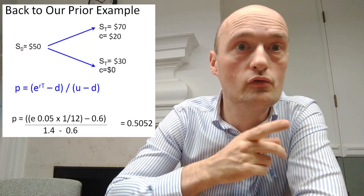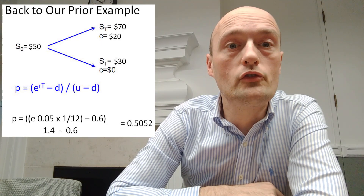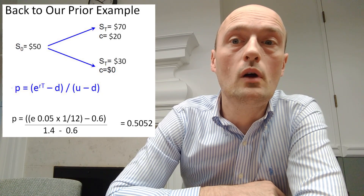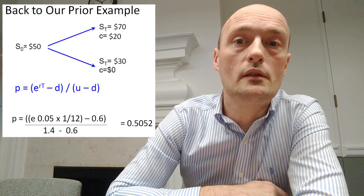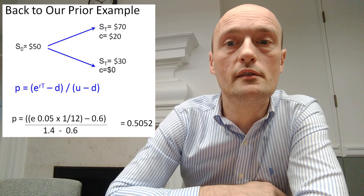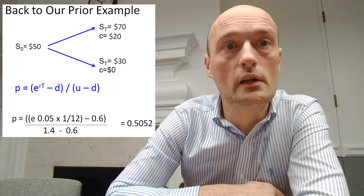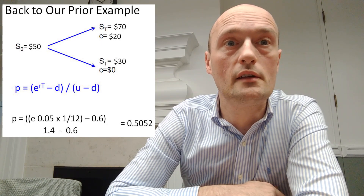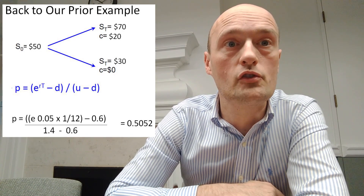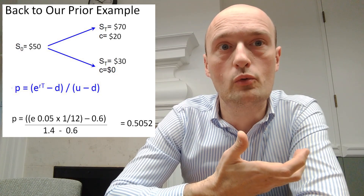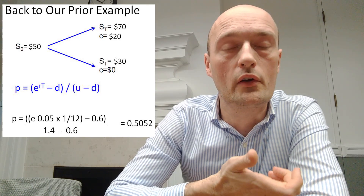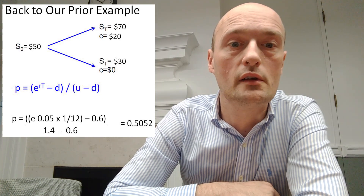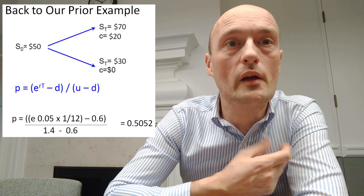Our first step is to draw the binomial tree and fill in what we know. The underlying is at 50 right now, so S0 equals 50. In the up scenario, ST equals 70, and in the down scenario, ST equals 30. The call is worth 20 in the upside scenario and zero in the downside scenario, because it is the right but not the obligation to buy at 50. When the underlying is at 70 that's clearly worth 20, and when the underlying is at 30 you would not want to buy at 50 — you would just tear up the options contract and it would expire worthless.